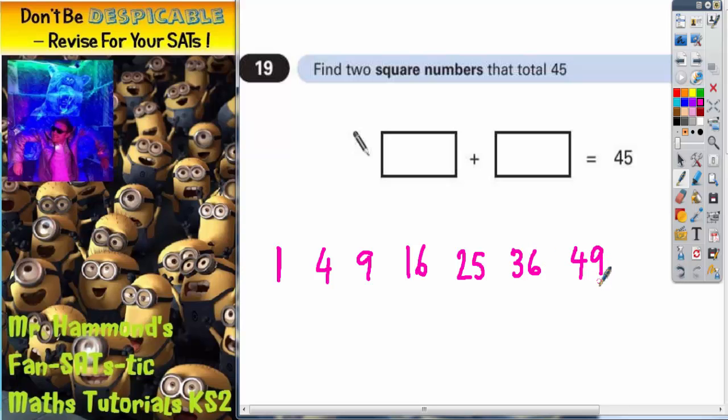Now, there's absolutely no point in going any further because we've already gone over 45. So, we're looking, and it can't be this one because that's already 49, that's already bigger than 45. So, we're looking for 2 numbers from this list of 6 numbers that are going to add together to make 45.